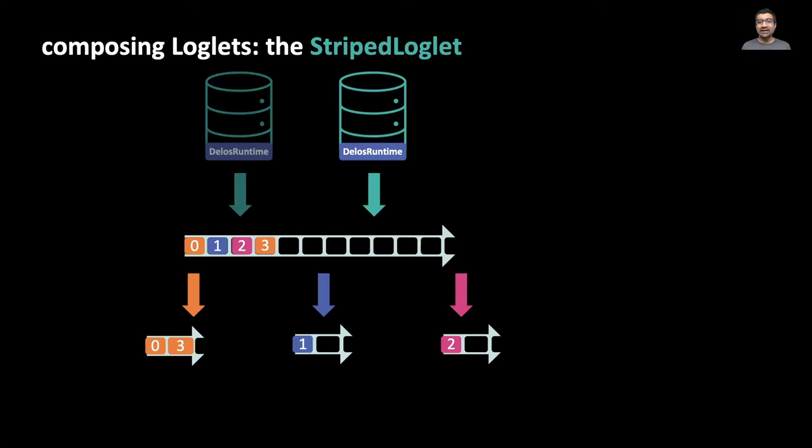Note that each client is appending independently, so a different client can follow a different round-robin schedule, in which case it can create holes in the striped loglet's address space. To provide linearizability, we do not acknowledge an entry in the striped loglet until all holes before it are filled. So in this case, we wait for positions four and five in the striped loglet to be filled before acknowledging position six.